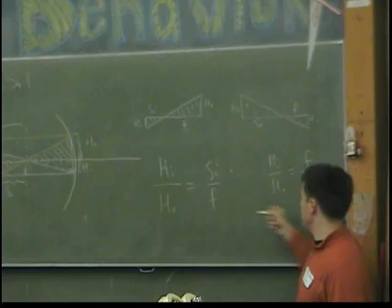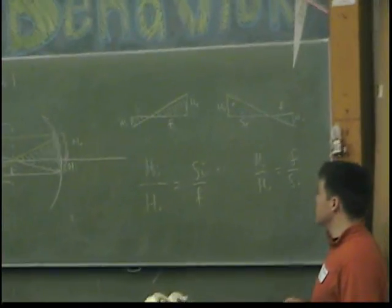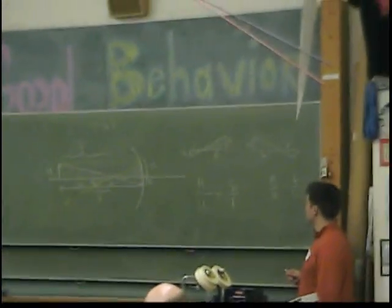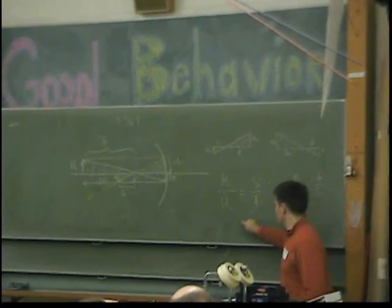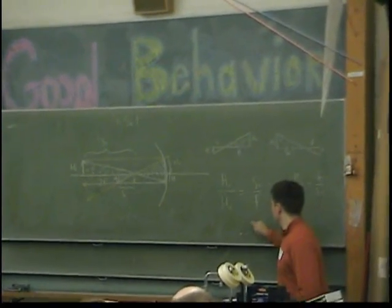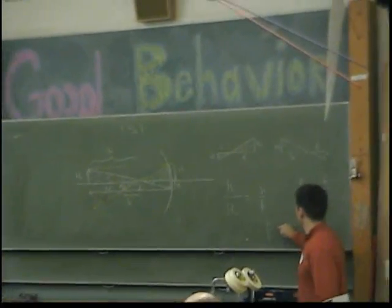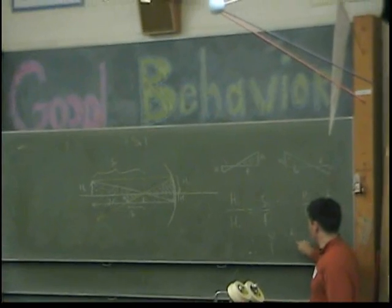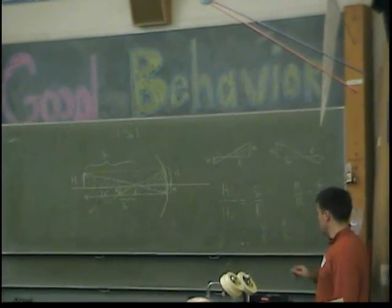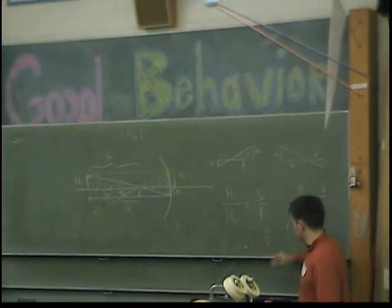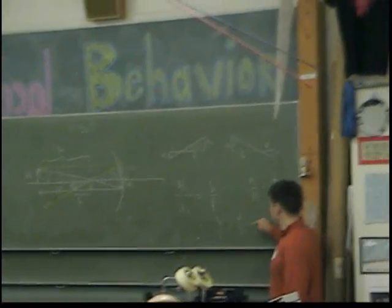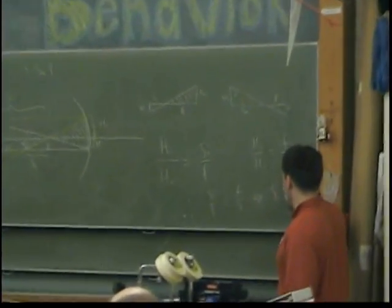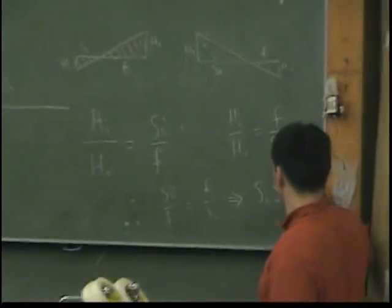So we've got HI over HO equals SI over F, and HI over SO equals F — wouldn't that mean that SI over F would also have to equal F over SO? Which, when we simplify that, we get SI times SO equals F squared. The same thing that they got from their lab within a few minutes.